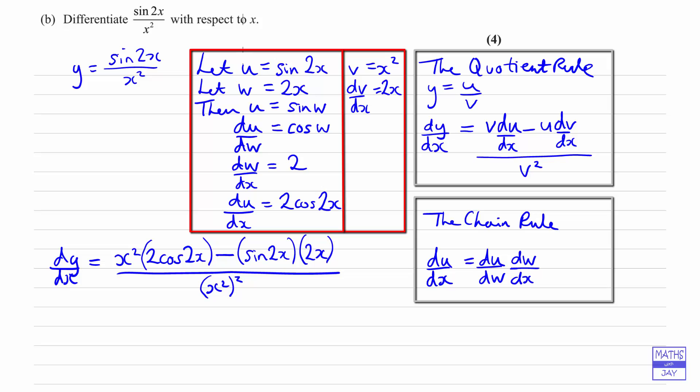So then all we need to do is tidy this up a little bit. So that's 2x squared cos 2x, and then we can bring the 2x in front of the next term, so we've got 2x sin 2x, and then x squared all squared will be x to the power of 4.